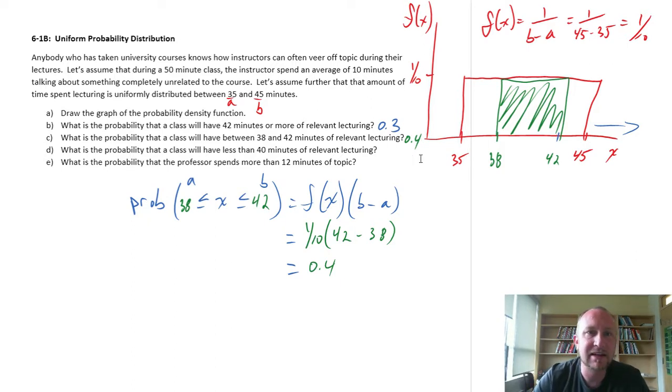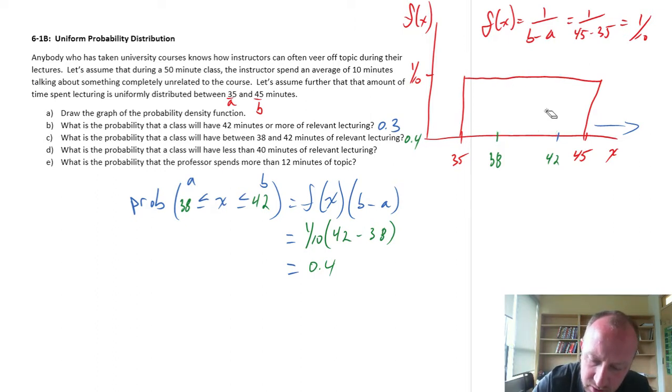What is the probability that a class will have less than 40 minutes of relevant lecture? Okay, so let's find, where's my eraser when I need it? So let's say 40. So here's 40. Less than 40. Well the minimum value this distribution has is 35. So we're in this space here.